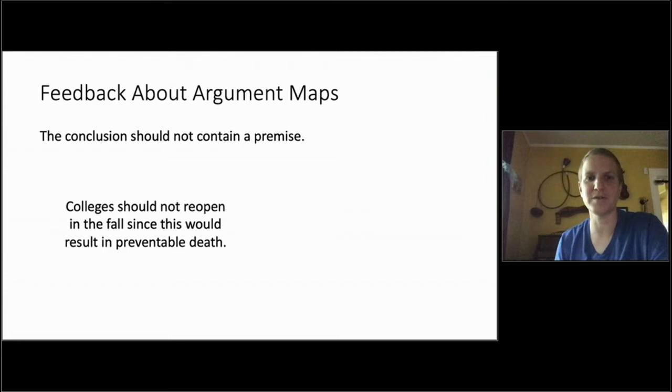The conclusion should not contain a premise. This is another mistake that I saw enough that I felt like mentioning it here. So several of you put something like this in your conclusion. Colleges shouldn't reopen in the fall since this would result in preventable death. That's a fair point and the point that some of the authors were making in the articles. But the problem with this is that you haven't pulled apart the premise and the conclusion. So the fact that opening colleges will result in preventable death, and now probably has, is a reason for believing the first half of this premise. So we don't want to stick those together because the whole point of the assignment is to pull that all apart so we can see how each piece relates. So that should look something more like this. Colleges should not reopen in the fall. And then the point about preventable death would be above in the premises.